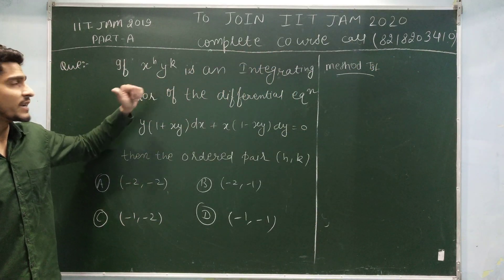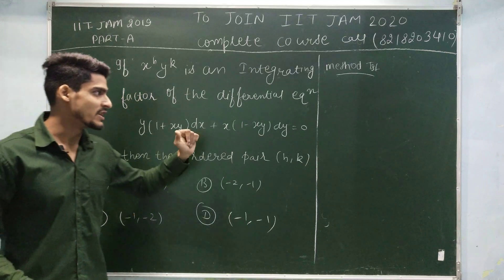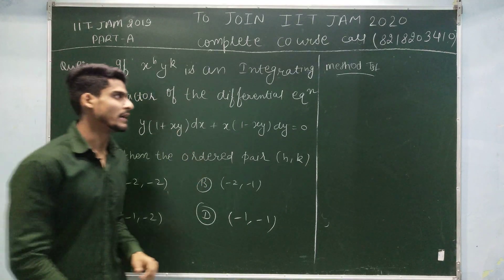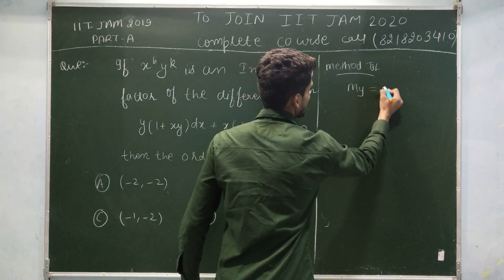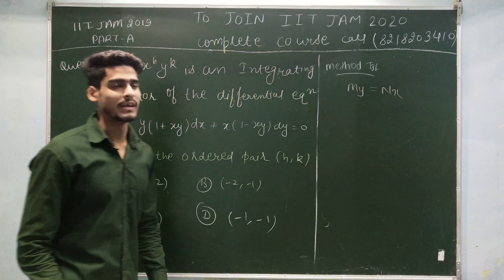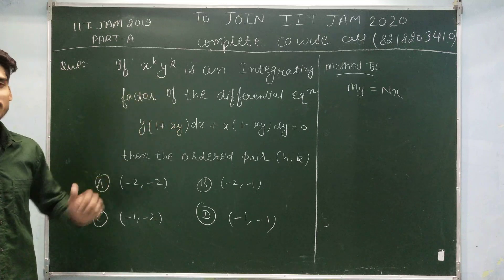First, x to the power h and y to the power k is the whole differential equation multiply. Then condition apply for exactness. My is equal to nx after multiplying this term to the differential equation.